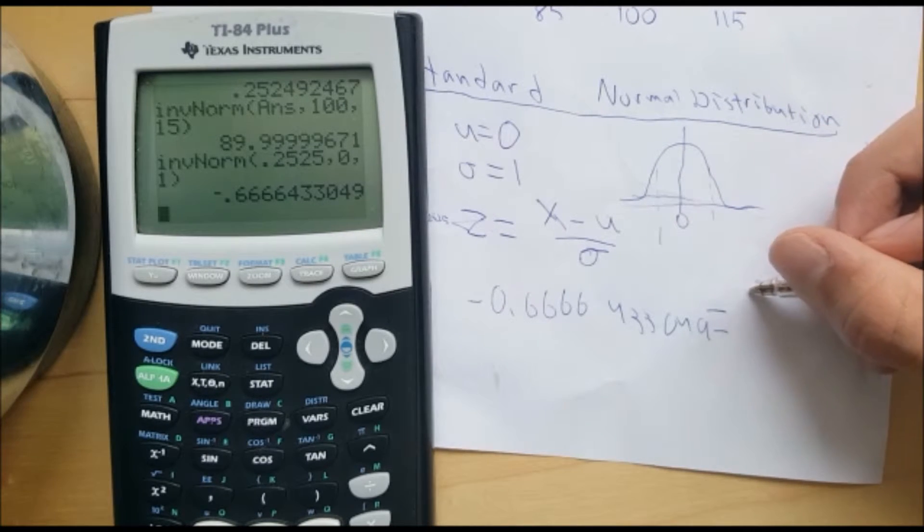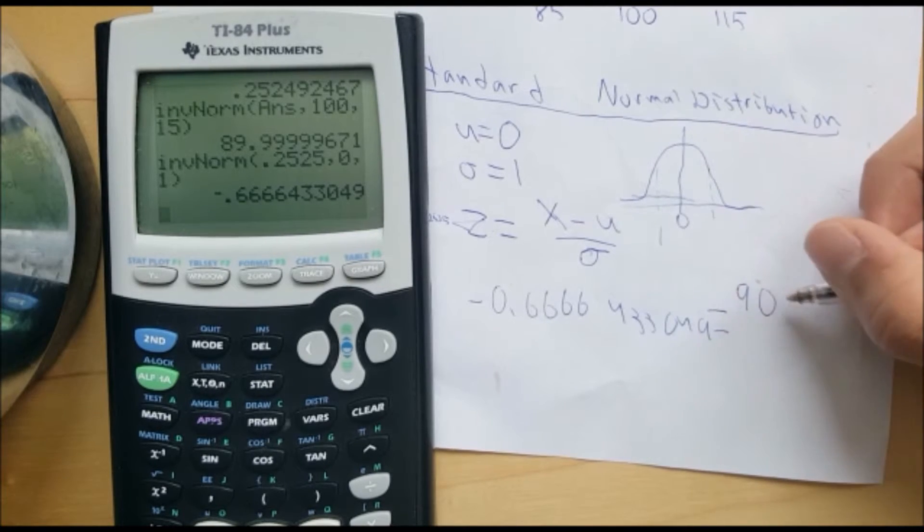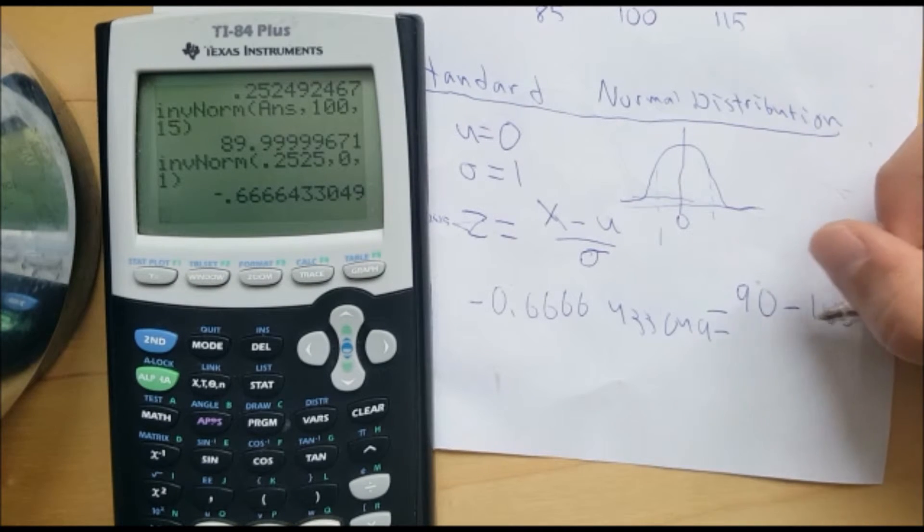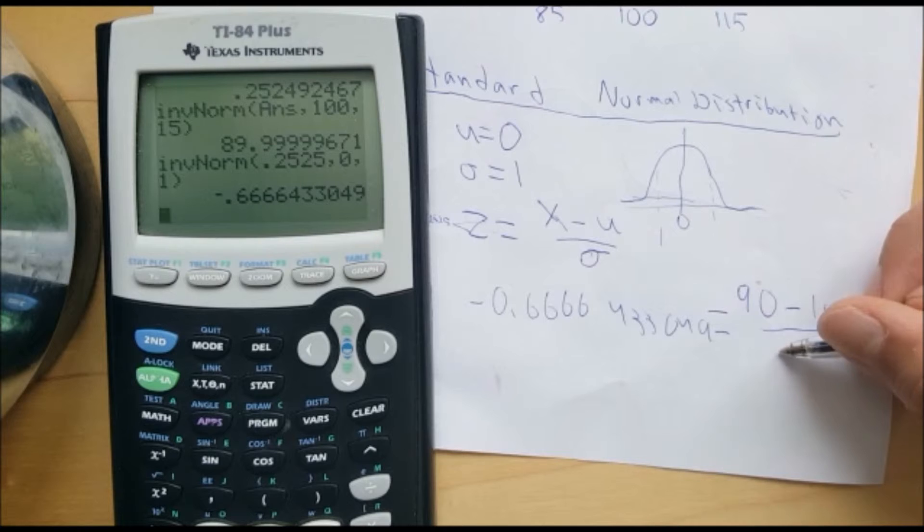We have negative 0.6666433049 is equal to X. The value on the normal distribution curve, the X value was 90 minus the mean was 100 over standard deviation.